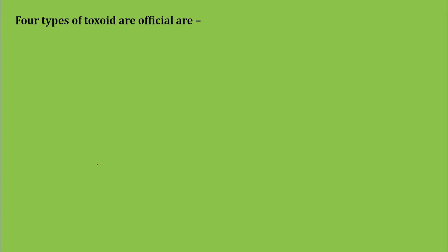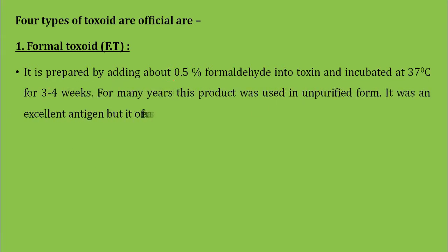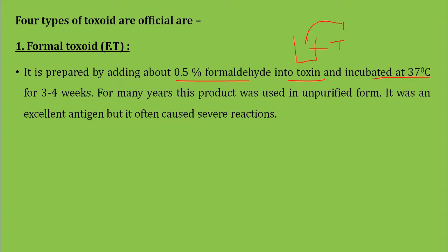The official preparations of toxoids are as follows. The first is formal toxoid, which is prepared by adding 0.5% formaldehyde to the toxin and incubating at 37 degrees Celsius for three to four weeks. For many years this product was used in an unpurified form; it was an excellent antigen but often caused certain severe reactions.